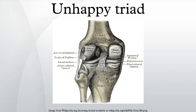Injury is most often sustained when a lateral force impacts the knee while the foot is fixed on the ground. The strong valgus or rotary force to the knee tears the ACL, MCL, and medial meniscus altogether. This type of injury occurs often in contact sports such as football, rugby, or motocross.